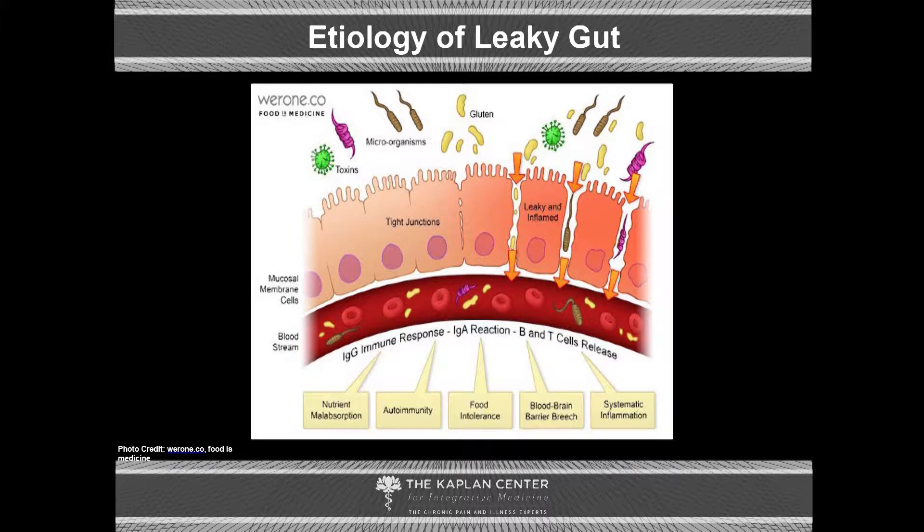We see food intolerances and disruption of the blood-brain barrier. People who seem allergic to everything don't actually have true allergies — what they have is a significant problem with the gut-blood barrier. There are tight junctions that, when opened up, allow large molecules to penetrate into the bloodstream. The body identifies these large molecules as antigens and makes antibodies to them, creating allergic reactions. What we need to do is go back and seal the gut.